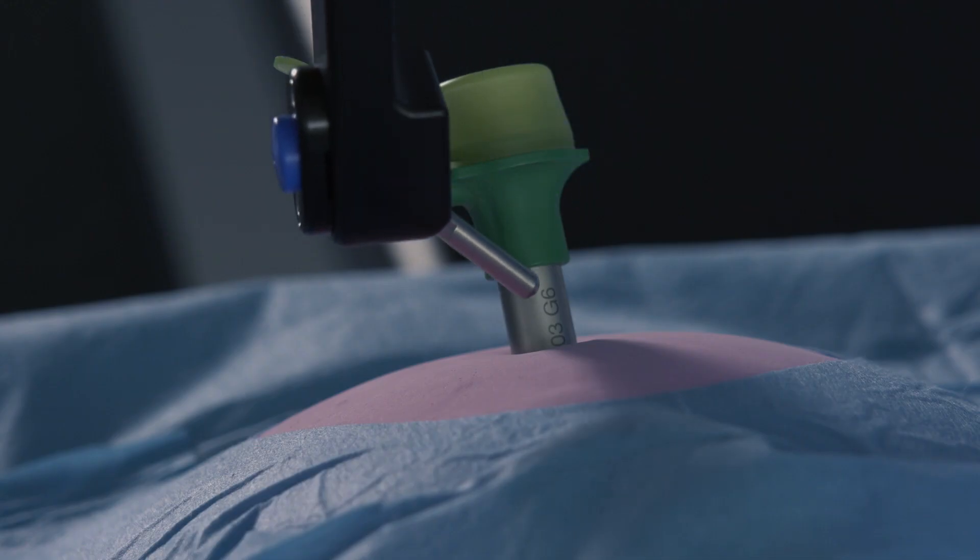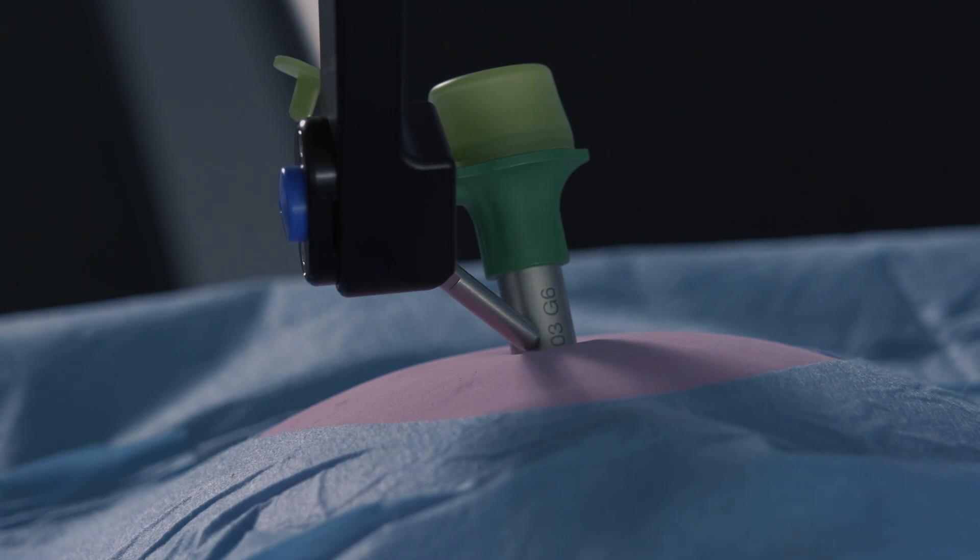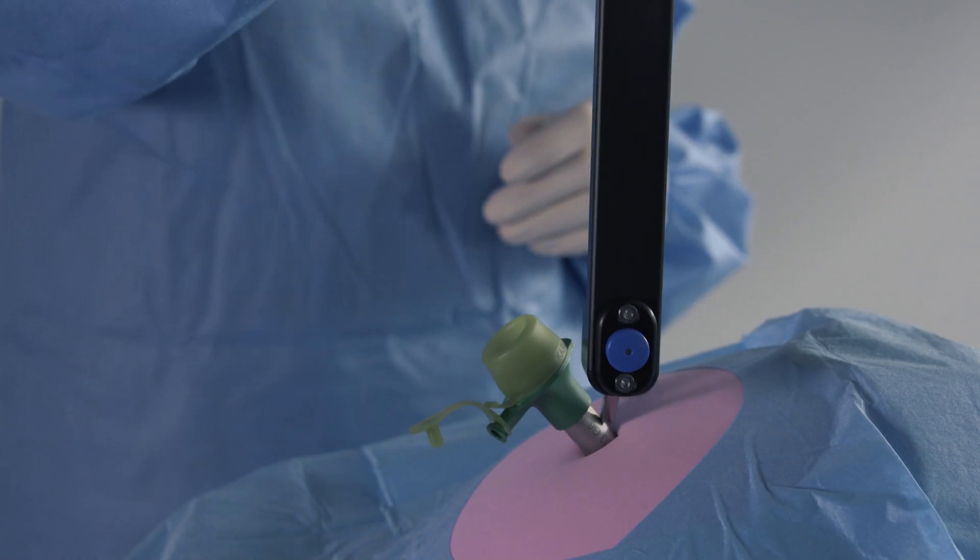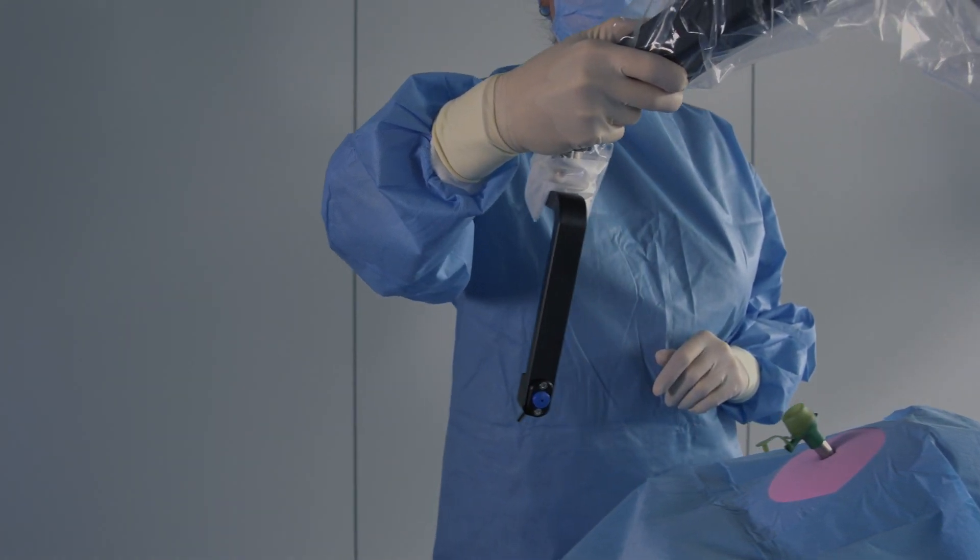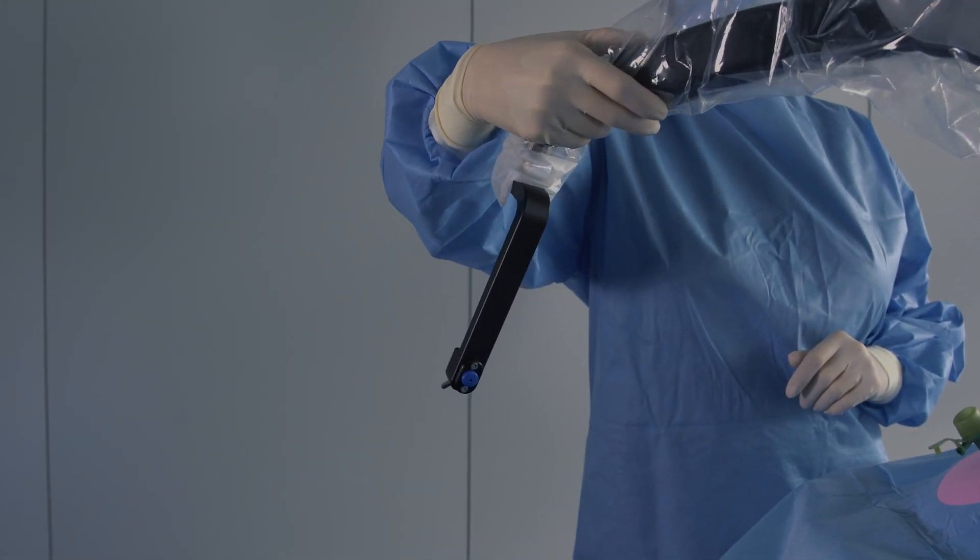If you lose power during the case, you will need to reset the trocar point. After setting the trocar point, move the arm away by pressing the unlock button on the control panel.